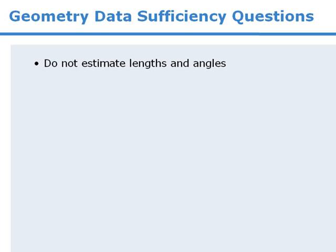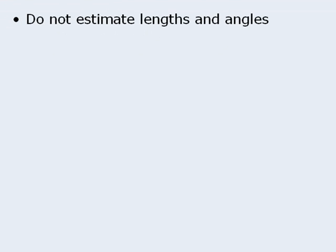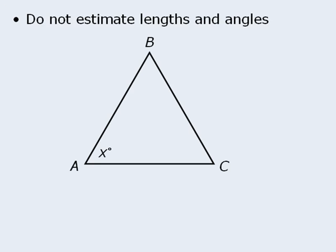The first tip is: do not estimate lengths and angles. The figures in data sufficiency questions are often intentionally drawn out of scale to mislead test takers. For example, in this figure here, we cannot draw any conclusions about any of the angles or lengths of the sides. Although this certainly appears to be an equilateral triangle, it could very well be a right triangle. So to solve a geometry question, we must apply the formulas and rules related to the figures at hand.